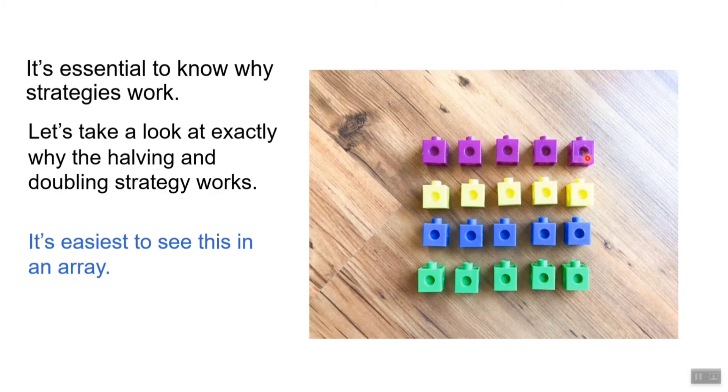There are 5 blocks in one line and 4 rows total. So here we have a 4 times 5 array, and we know 4 times 5 is 20.